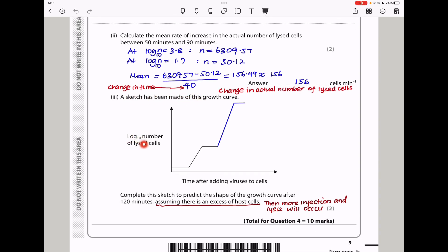A sketch has been made of this growth curve. Here we have log to base 10 number of the lysed cells, and then the time after adding the viruses to the cells. They say complete this sketch to predict the shape of the growth curve after 120 minutes, assuming there is an excess of host cells. I've tried to bring this down here a little bit, not to exceed the vertical axis. The key thing is this gap is going to be bigger than that gap, to show that there is going to be a higher concentration of the viral particles that are infecting cells. This brings us to the end of question 4.